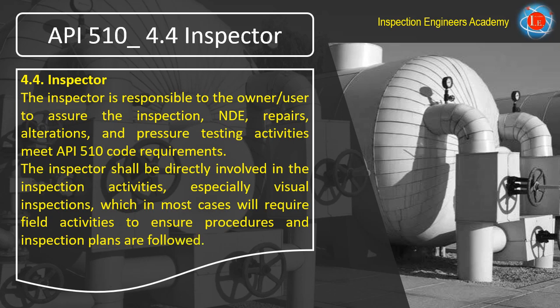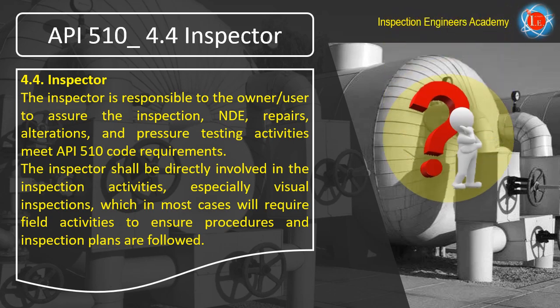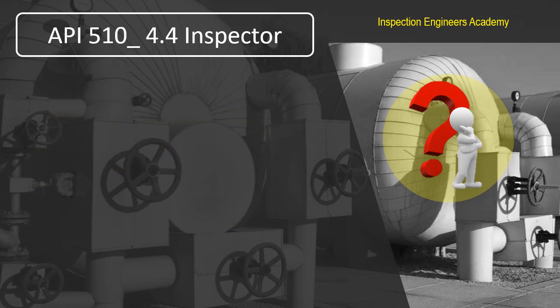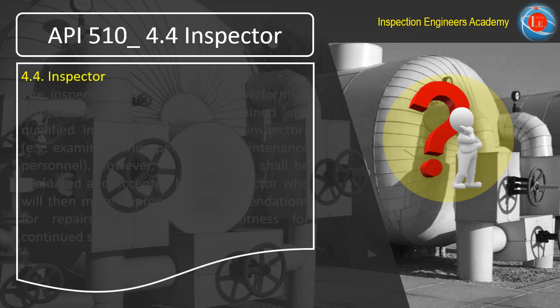However, in most practical situations, the API 510 inspector may not be able to directly perform or witness the specific activities on several pieces of equipment simultaneously. This could be due to time limitations, particularly during emergencies, shutdowns, and turnarounds.